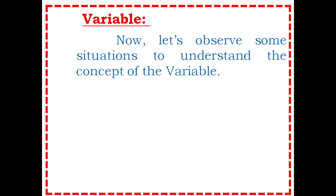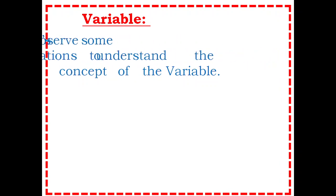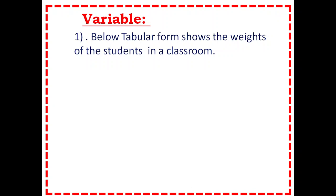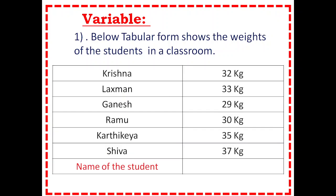Now let's know what is a variable. Let's observe some situations to understand the concept of the variable. The table below shows the weights of the students in a classroom: Krishna's weight is 32 kg, Lakshman's weight is 33 kg, Ganesh 29 kg, Ramu 30 kg, Kartikeya 35 kg, Shiva 37 kg.